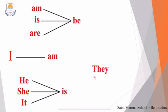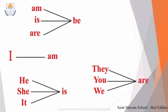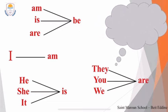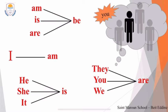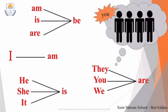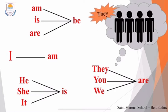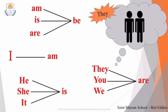Now with they, you, we — I use 'are'. We also said that 'you' might refer to two persons, one person, or many. And 'they' might refer to many persons or two persons.